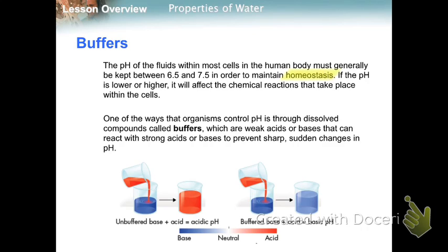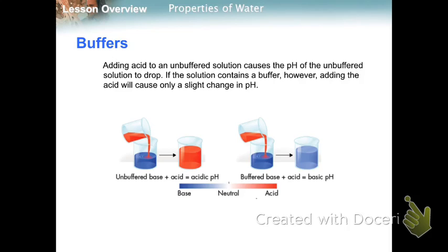Returning to homeostasis — a stable internal environment — the pH of the fluids in most human body cells needs to be kept between 6.5 and 7.5. If the pH is lower or higher, the enzymes responsible for building things up and breaking things down won't be able to work. Organisms control pH through the use of buffers — weak acids or bases that can react with strong acids or bases to prevent sudden changes in pH. Adding acid to an unbuffered solution causes pH to drop, but if a solution contains a buffer, adding acid will only slightly change the pH.